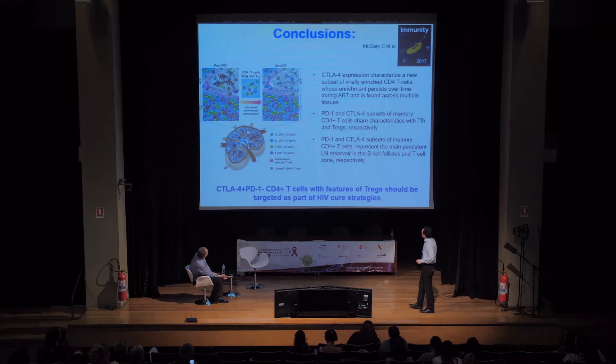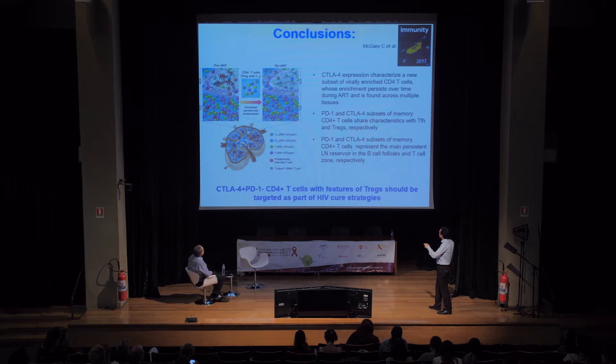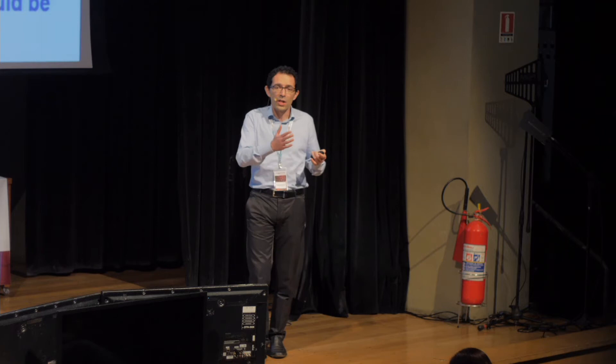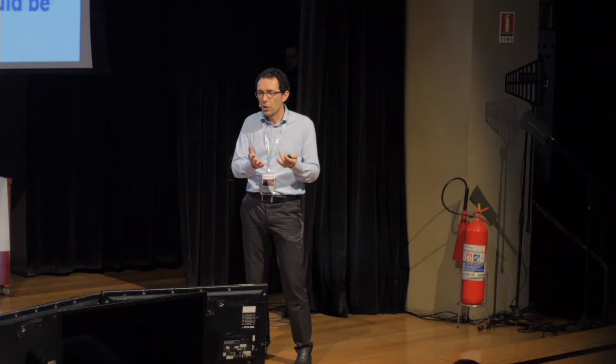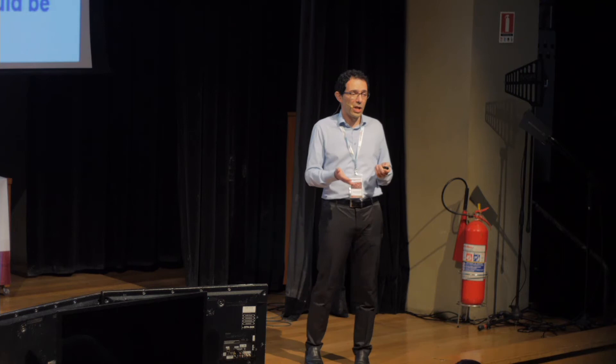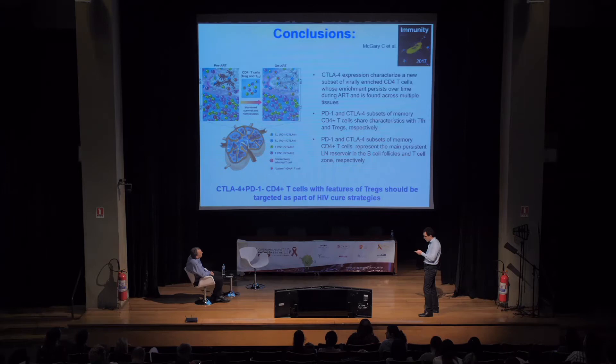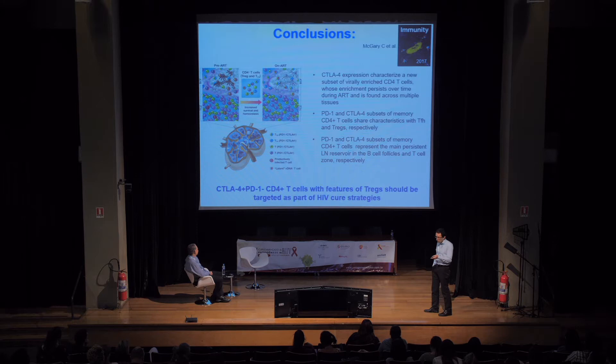Following that publication and the previous Nature Medicine paper, there is growing interest in targeting T follicular helper cells — studies aiming to deplete CD20 so CD8 cells can enter the follicle, and studies targeting PD-1 since Tfh cells express PD-1. However, our point is that while it is critical to target PD-1-positive cells, those interventions will not reach the CTLA-4+PD-1− cells that we believe are also an important contributor to SIV persistence.